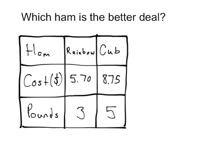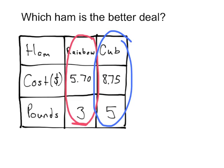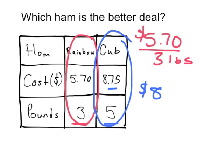Which ham is the better deal? You can go to Rainbow and get a ham for $5.70 and it's got three pounds. Or you can go to Cub and buy a ham for $8.75 and it will be five pounds. So let's make ratios. Rainbow is $5.70 for three pounds. And Cub is $8.75 for five pounds.